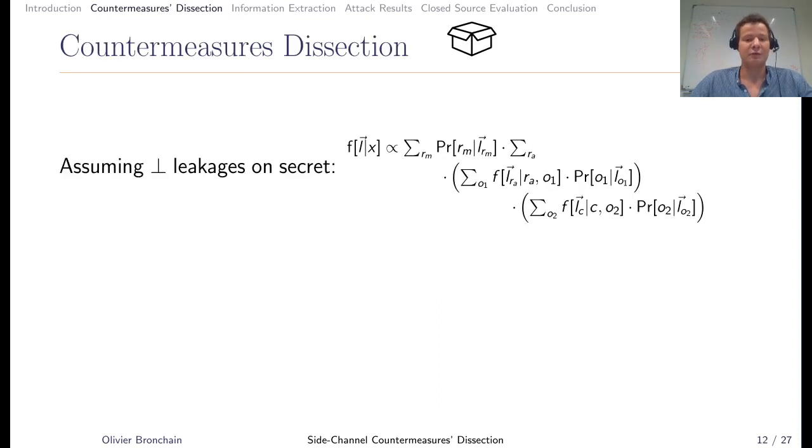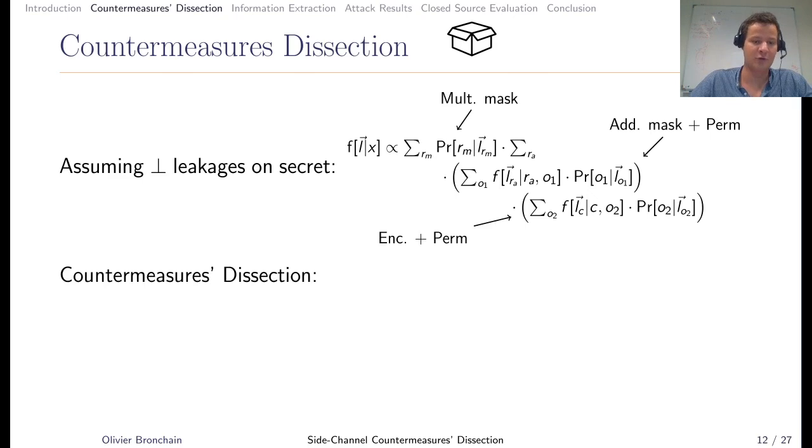We rephrased the previous equation by assuming independence between some secrets. The expression still has a sum on all possible multiplicative masks, then a sum on all possible additive masks and permutations, and then another non-joint sum on all the other shares and permutations. With this equation, we can do what we call countermeasure dissection.